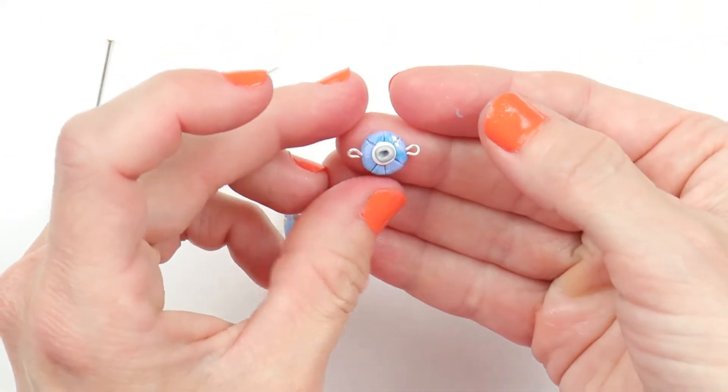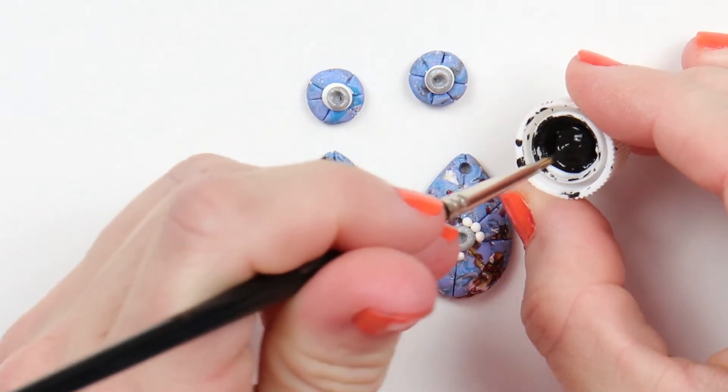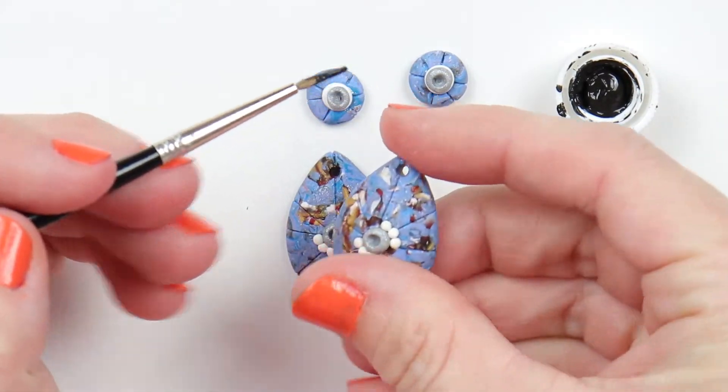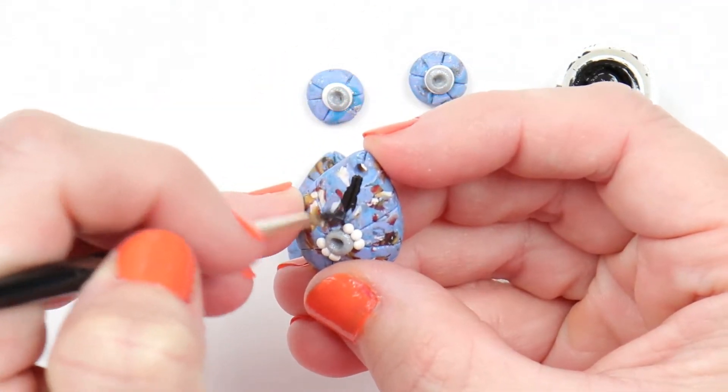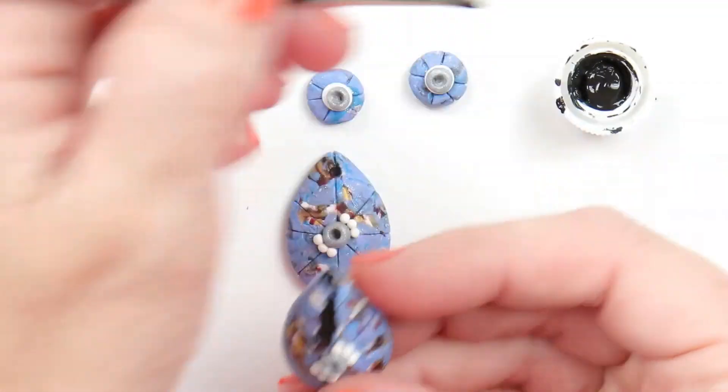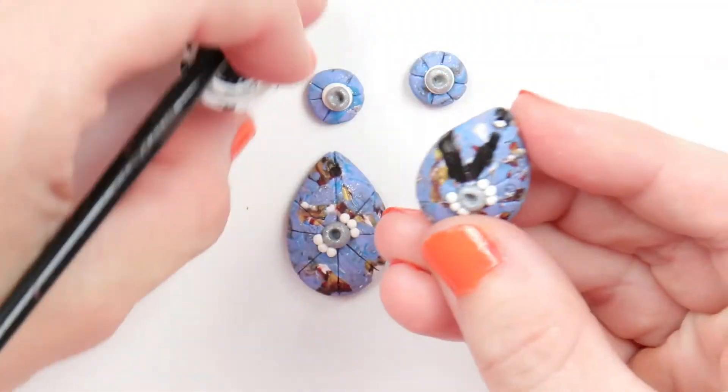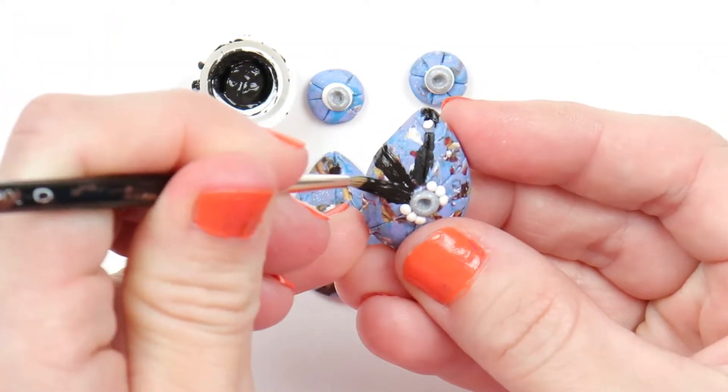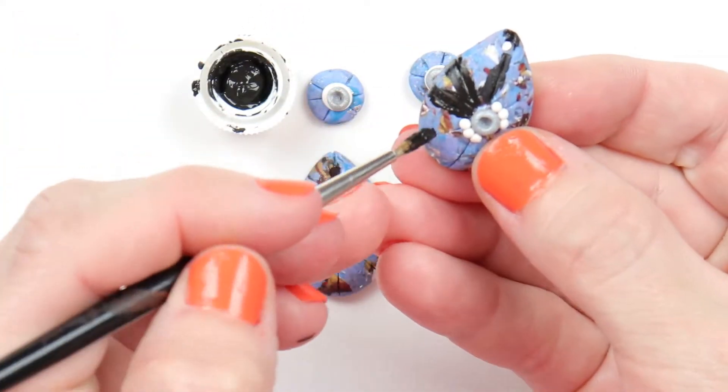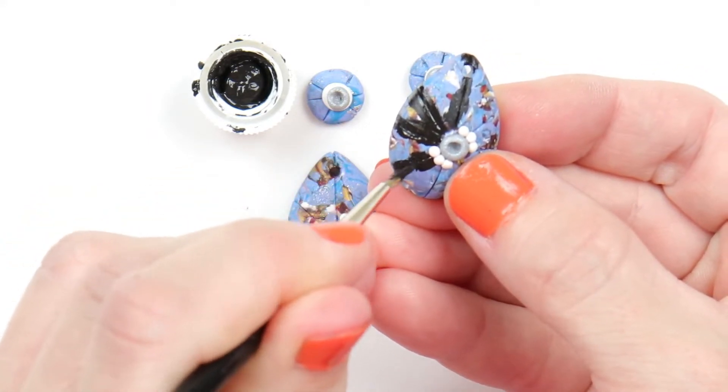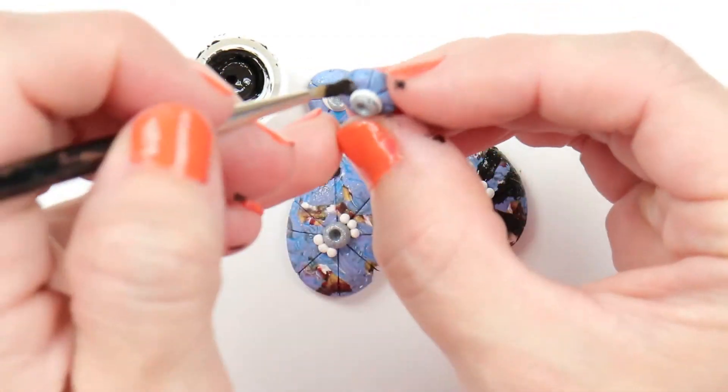Now bake your pieces. Once you've baked your pieces, take your black paint and apply it into all of the design that we made. Repeat with all of your pieces.